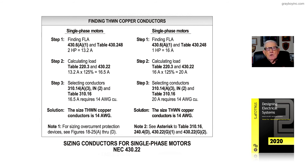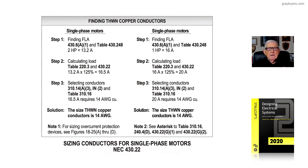The full-load current comes from Table 430.248, as instructed by 430.6A1. As a rule of thumb, sometimes an electrician will take the 16 amps and round it up to an even unit number — round it up to 20, then apply 125% to size the conductor. It might be a little larger, but it will supply the amps needed to drive the motor and the load.